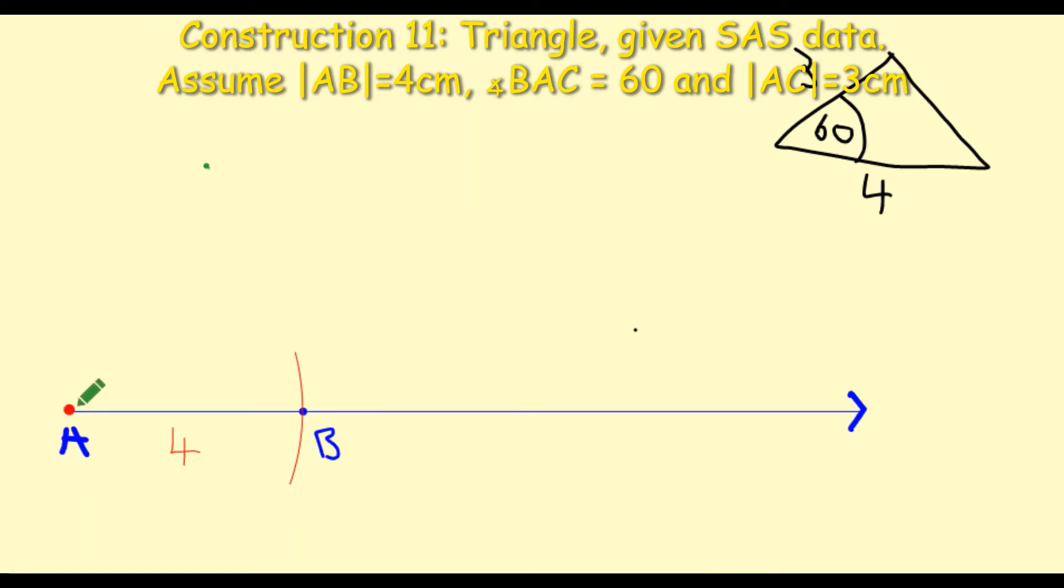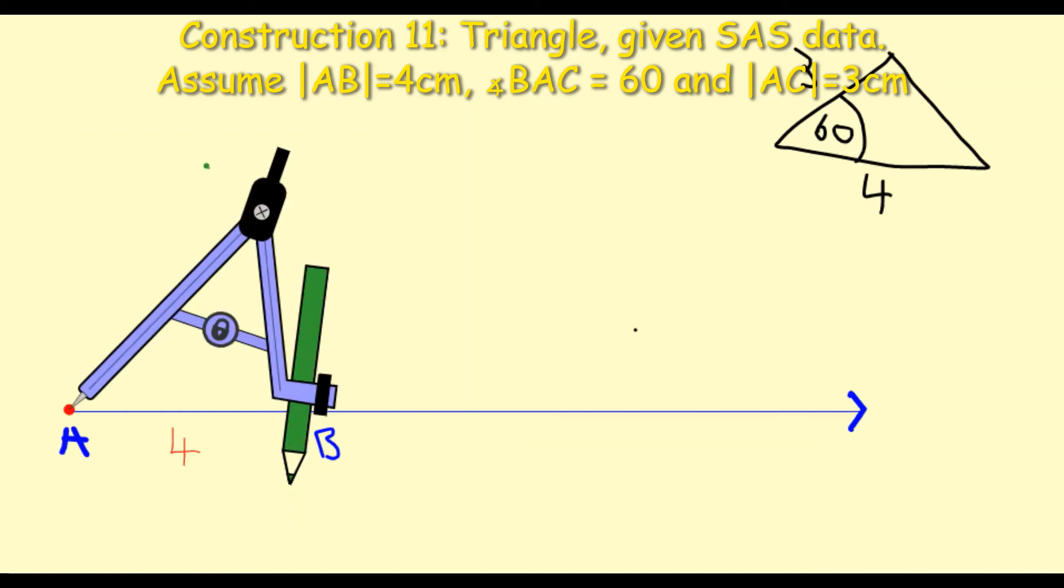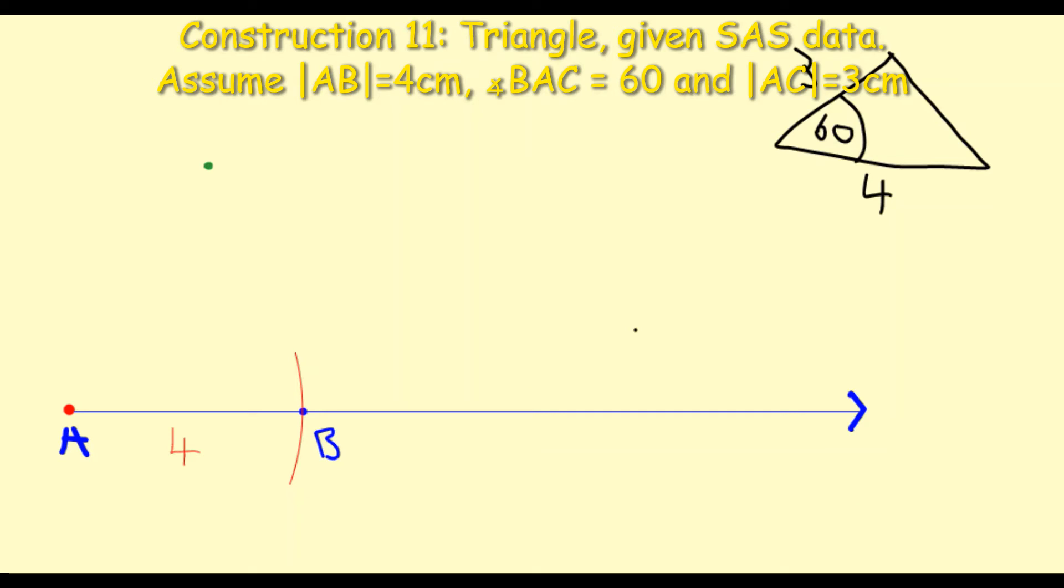What I want to do now is basically connect A to this point. Now it doesn't have to be a particular length. It's basically starting at A and going through the green dot. So I'm creating a ray. I'm just going to mark that dot a little bit thicker there so we can see it. With your ruler draw a line from A through that green dot.